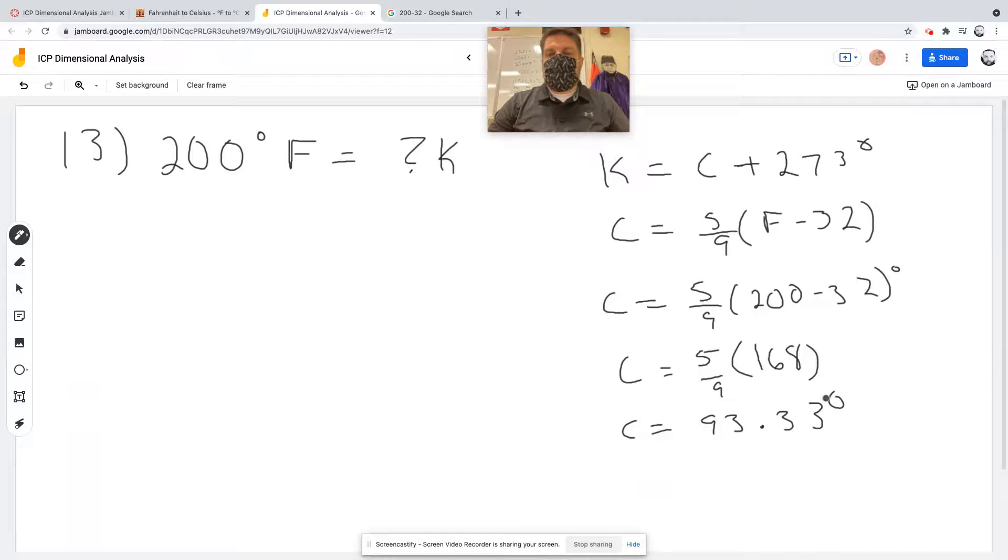Well, I need to know what that is in Kelvin. So now to find Kelvin, remember that Kelvin is equal to the temperature in Celsius, which is 93.33 plus 273 degrees. So this is this temperature plus 273 degrees.